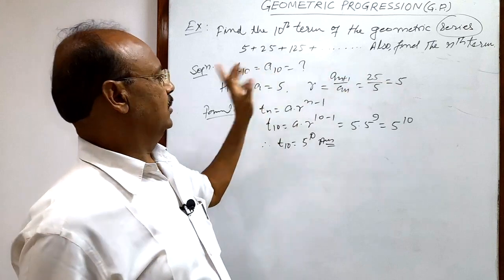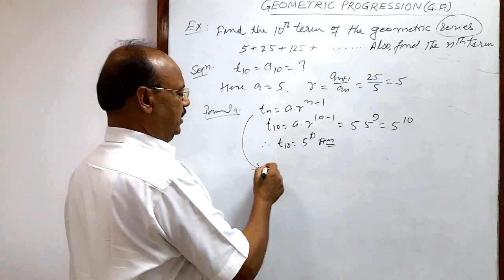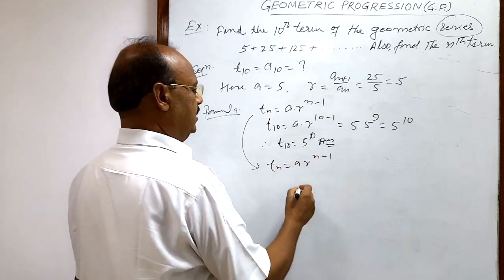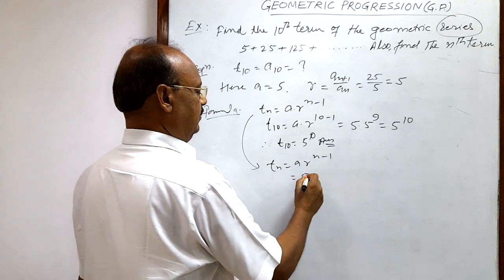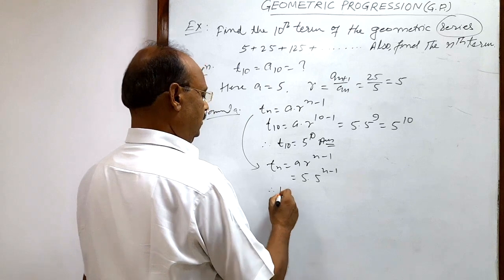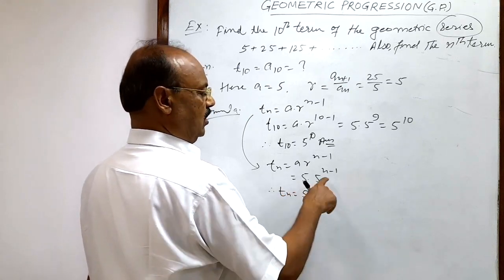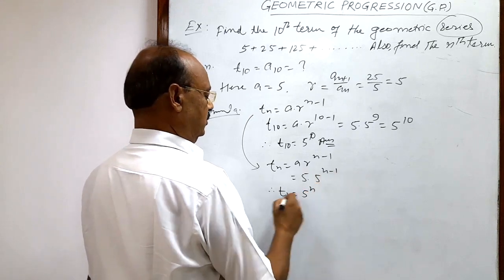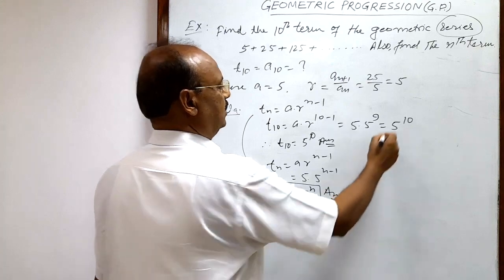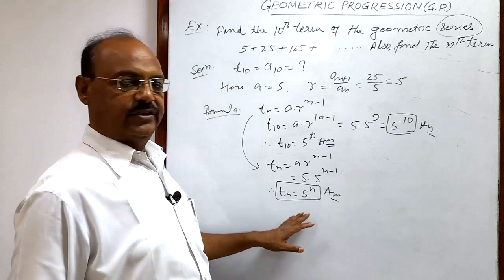Now we have to find the nth term. Using the formula, tn equals a times r to the power n minus 1, with a equal to 5 and r equal to 5, we get tn equals 5 times 5 to the power n minus 1, which simplifies to 5 to the power n. So the nth term is 5 to the power n. The 10th term is 5 to the power 10, and the nth term is 5 to the power n.